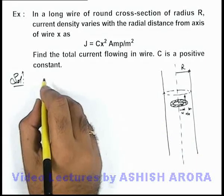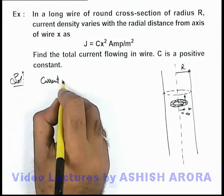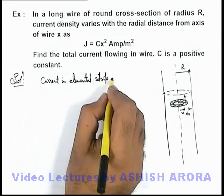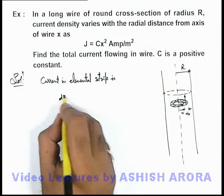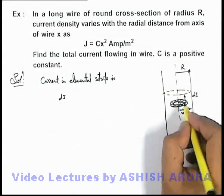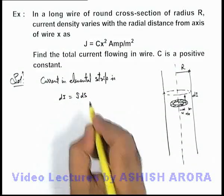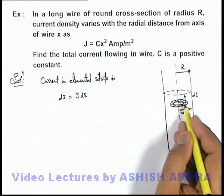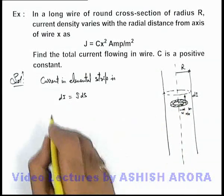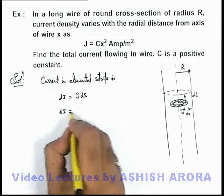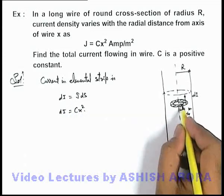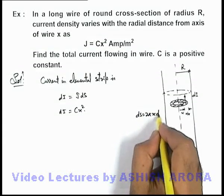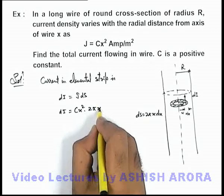So here we can find the current in the elemental strip. This can be written as dI, the current flowing in the elemental strip, which equals j·dS. We won't take the dot product because the current density and the area vector of the strip are in the same direction. So dI = cx² · 2πx dx.